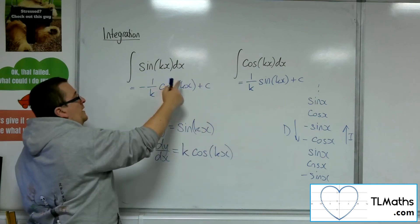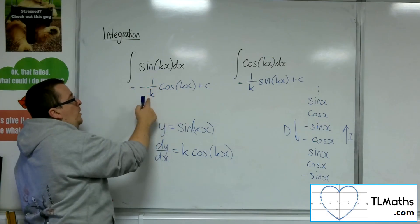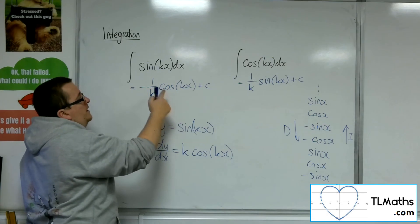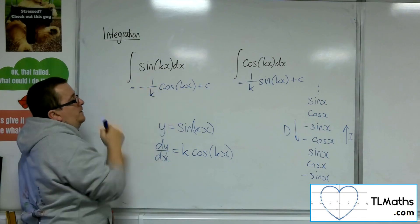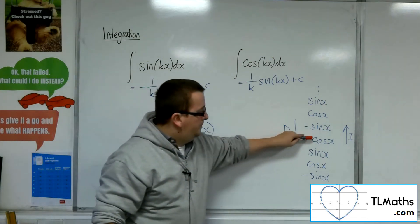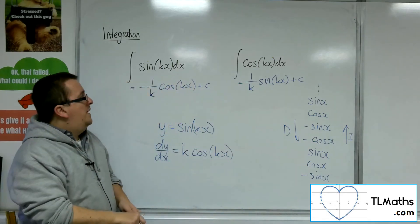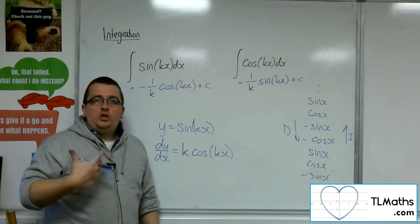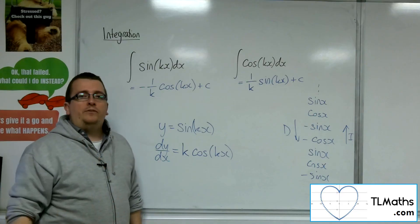The k comes out, multiplies with the 1 over k, becomes 1, and minus cosine differentiates to sine. So that is why we have these two results, which we should remember and memorize moving forward.